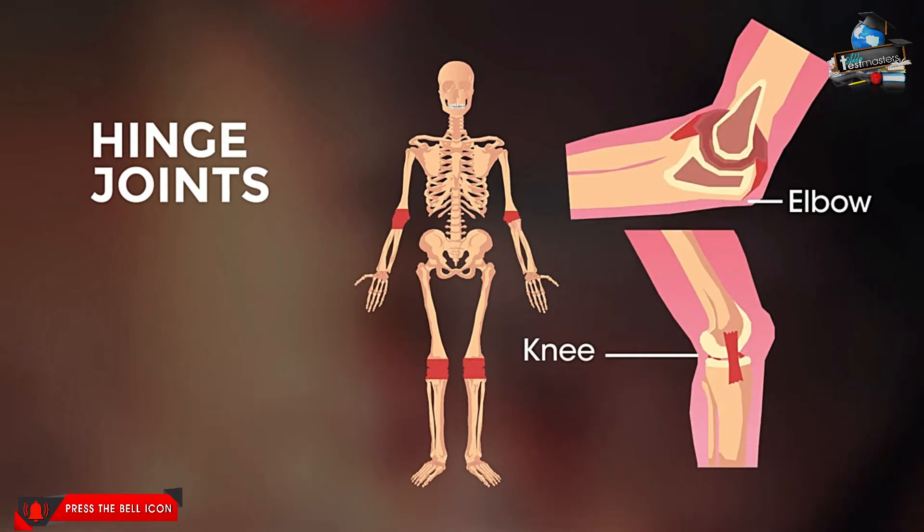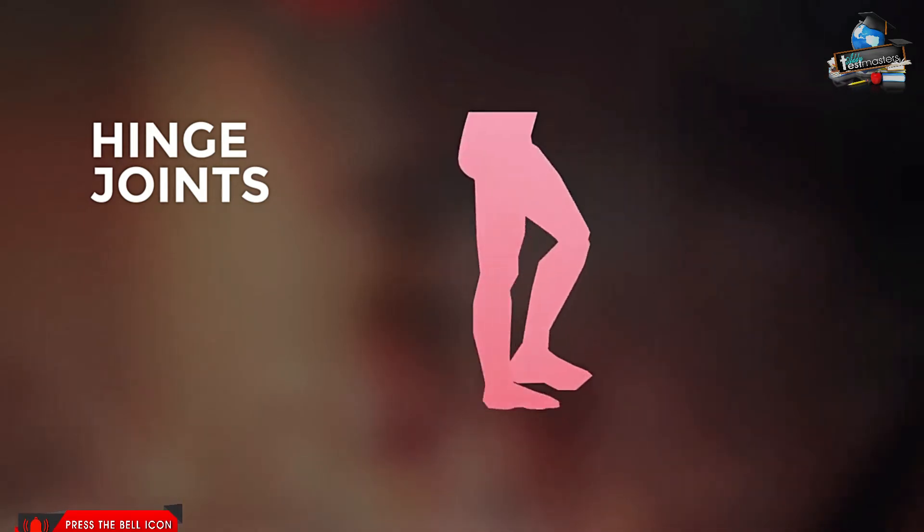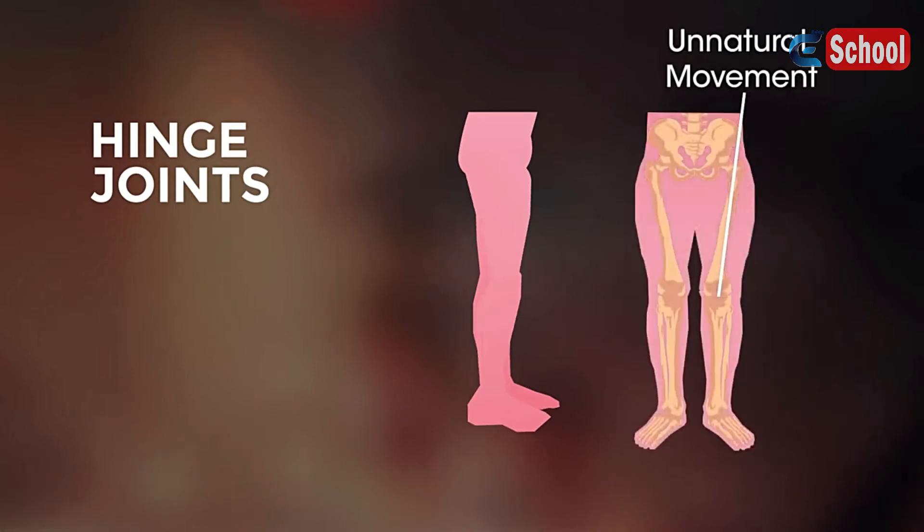These joints can only move in one direction, to bend and straighten. They don't naturally rotate from side to side. If they do, you might have an injury.